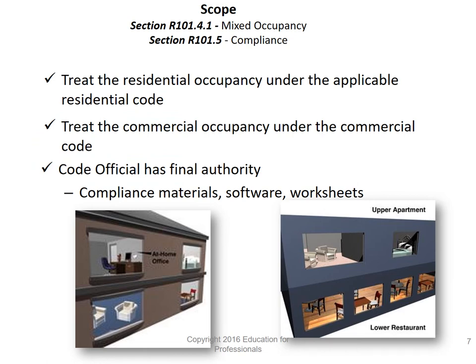For mixed occupancies — for example, a restaurant on the ground floor with apartments above — you treat the residential occupancy under the residential code and the commercial occupancy under the commercial code, so you're allowed to divide the two. A code official always has final authority, so it's best to check with the inspector, city, or town you're working in.